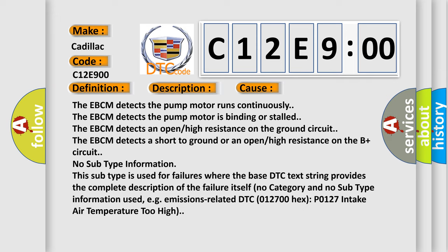No subtype information. This subtype is used for failures where the base DTC text string provides the complete description of the failure itself. No category and no subtype information used, e.g., emissions related DTC 012700 hex P0127 intake air temperature too high.